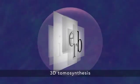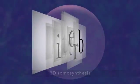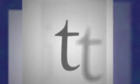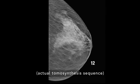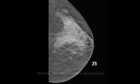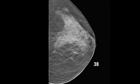3D tomosynthesis is different because it shows your tissue in very thin layers, almost like turning pages in a book. That makes it easier for doctors to see if there's anything to be concerned about. There's less chance for a cancer to hide behind overlapping tissue.